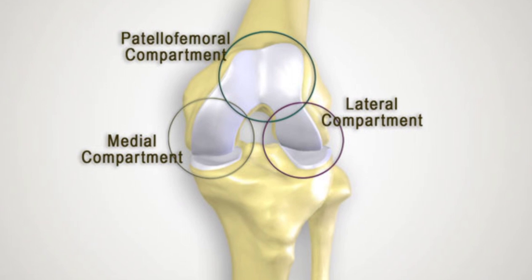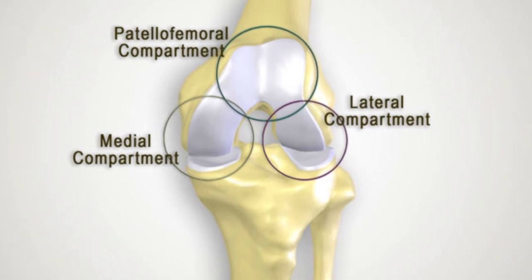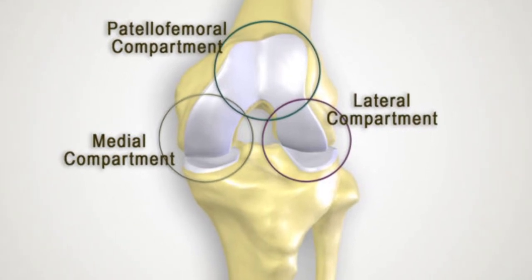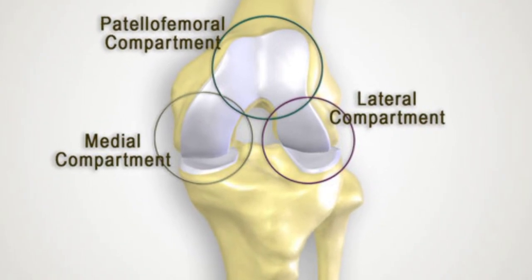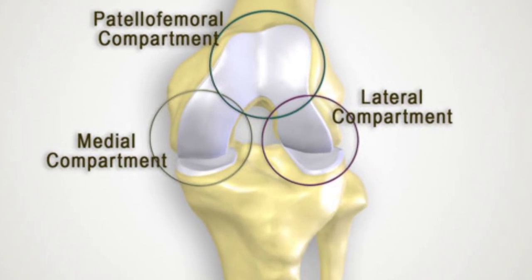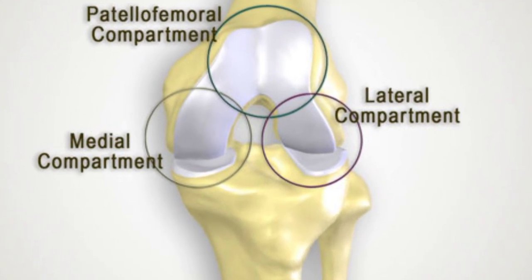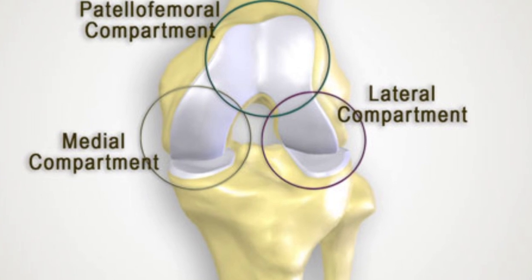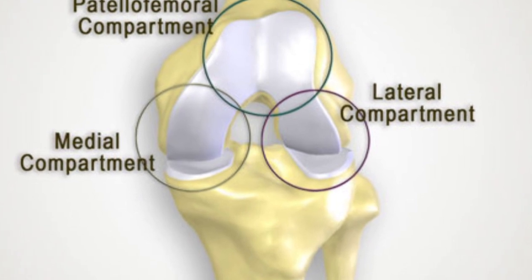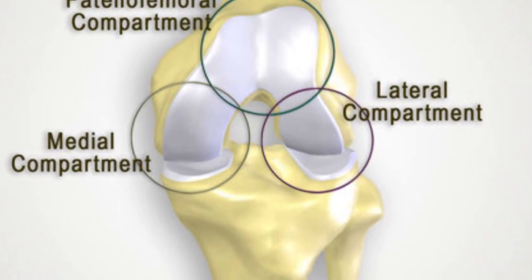Partial knee replacement targets specific compartments of the knee, which may include the inner compartment, outer compartment, or the patellofemoral compartment, which is behind the kneecap. The choice of compartment depends on the location and severity of the arthritis or damage.